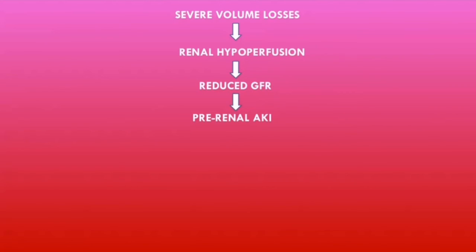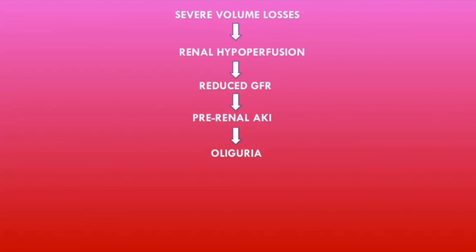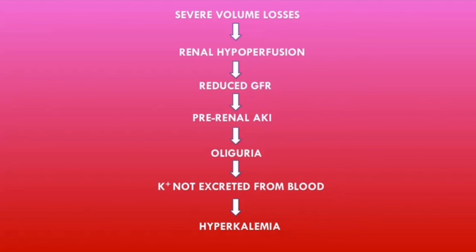Acute kidney injury refers to a sudden decline in renal function over hours or days. One of the major problems patients with acute kidney injury develop is oliguria — a severely reduced urine output. In DKA, serum potassium levels are already increasing, and if patients are not producing urine, the kidneys cannot excrete the extra potassium into the urine. So potassium stays in the blood, and as it accumulates, patients develop hyperkalemia. This is how patients in DKA can present with hyperkalemia via a pre-renal acute kidney injury.